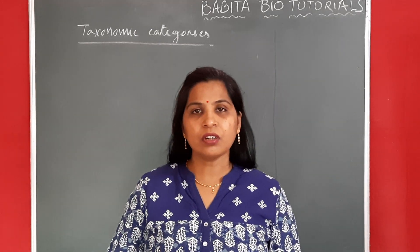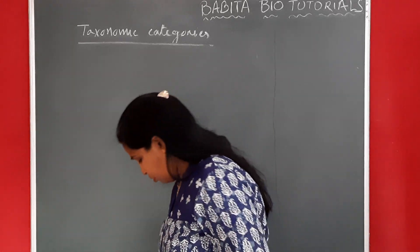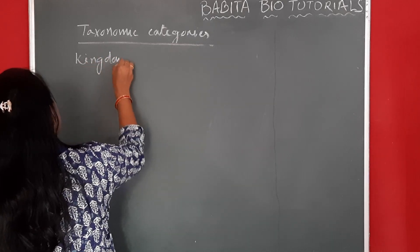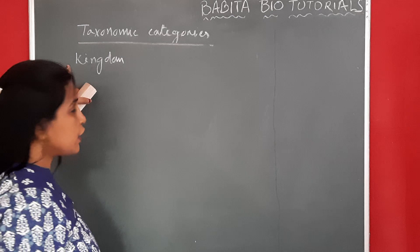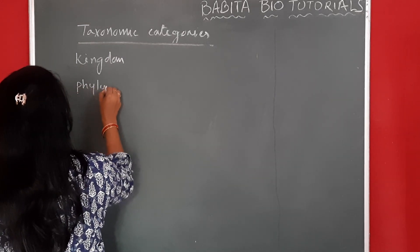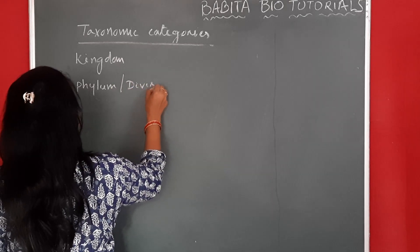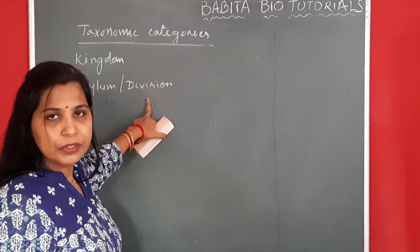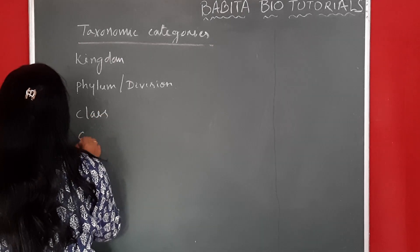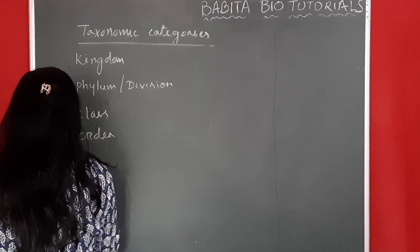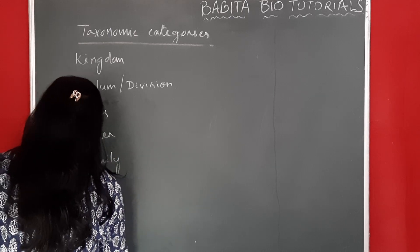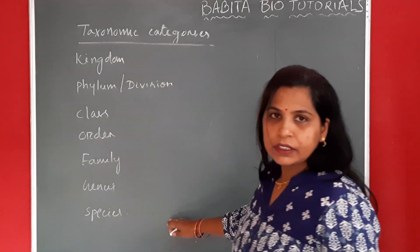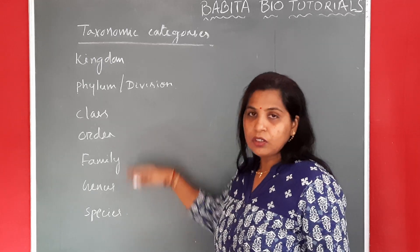We know that the hierarchy may be in ascending order or descending order. It will start from your kingdom. Kingdom is the highest place for an organism. Then will be your phylum or division. When we are writing for the animal, then we will go for phylum. And when we write for the plants, then it will be division. Then will be your class, order, family, genus, and species. I have written in the descending order, but you can write in the ascending order also.